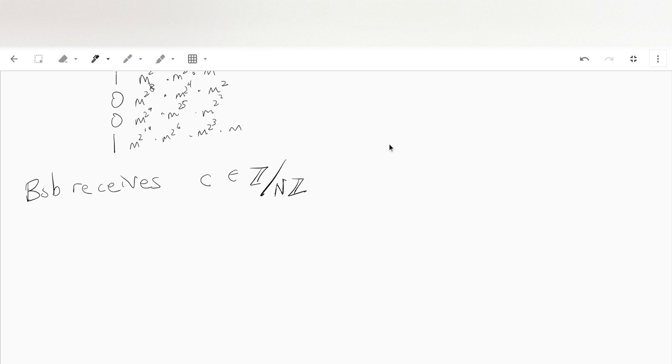And Bob's private key is phi of n, d. And he also knows, and an e as well, if he needs it.